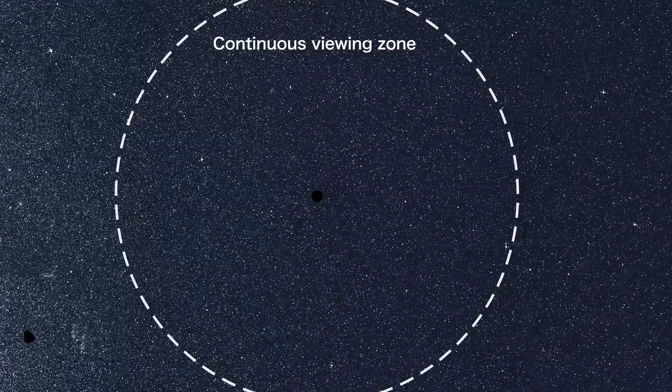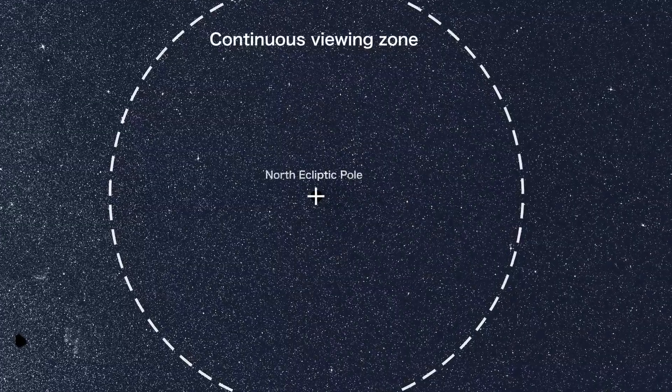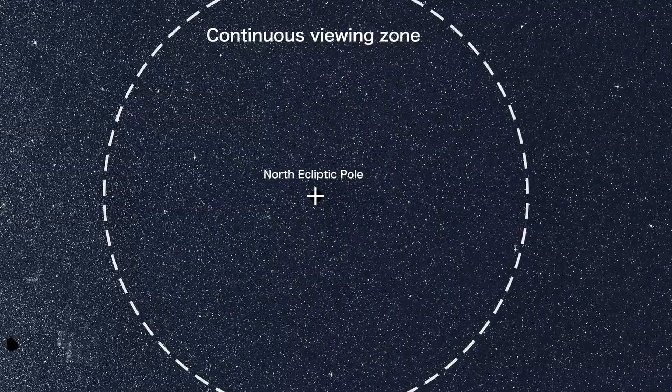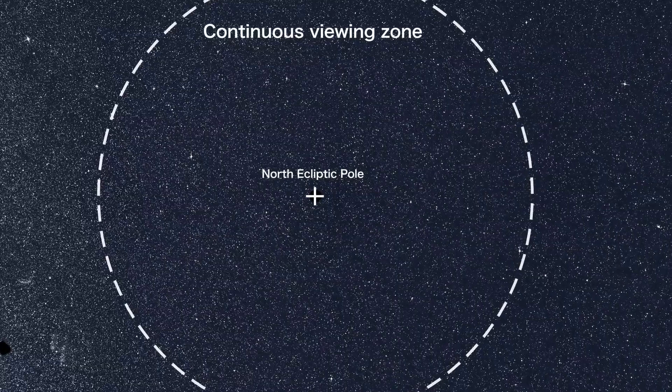At its center is the North Ecliptic Pole. This is where the imaginary axis of Earth's orbit around the Sun meets the sky.